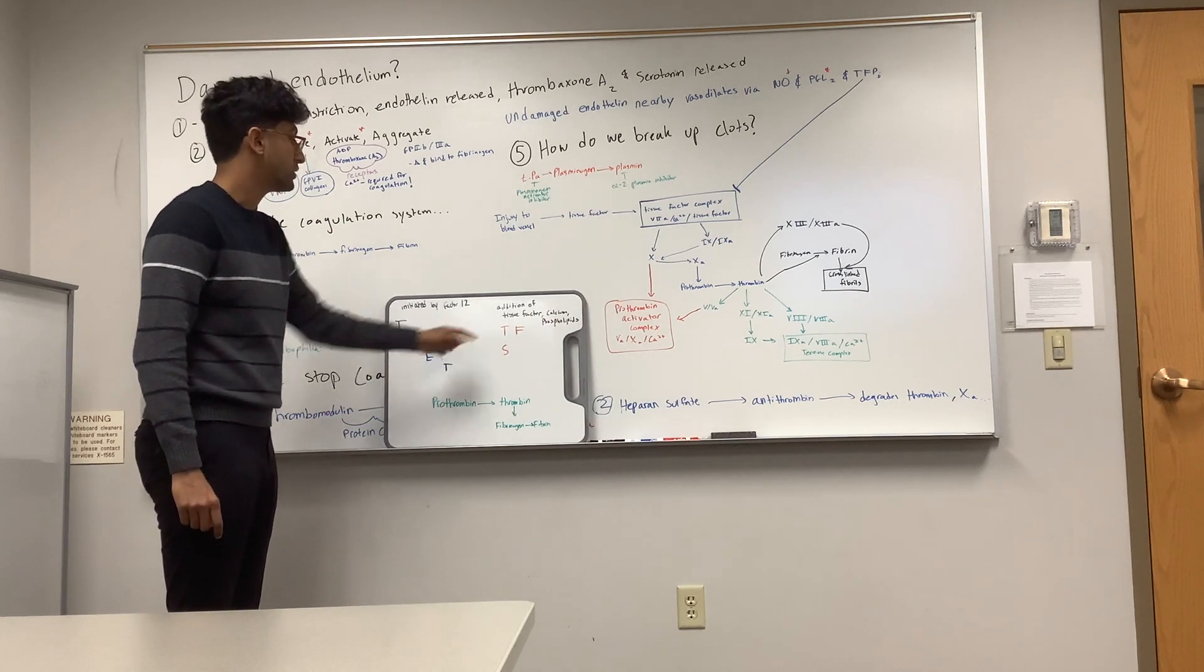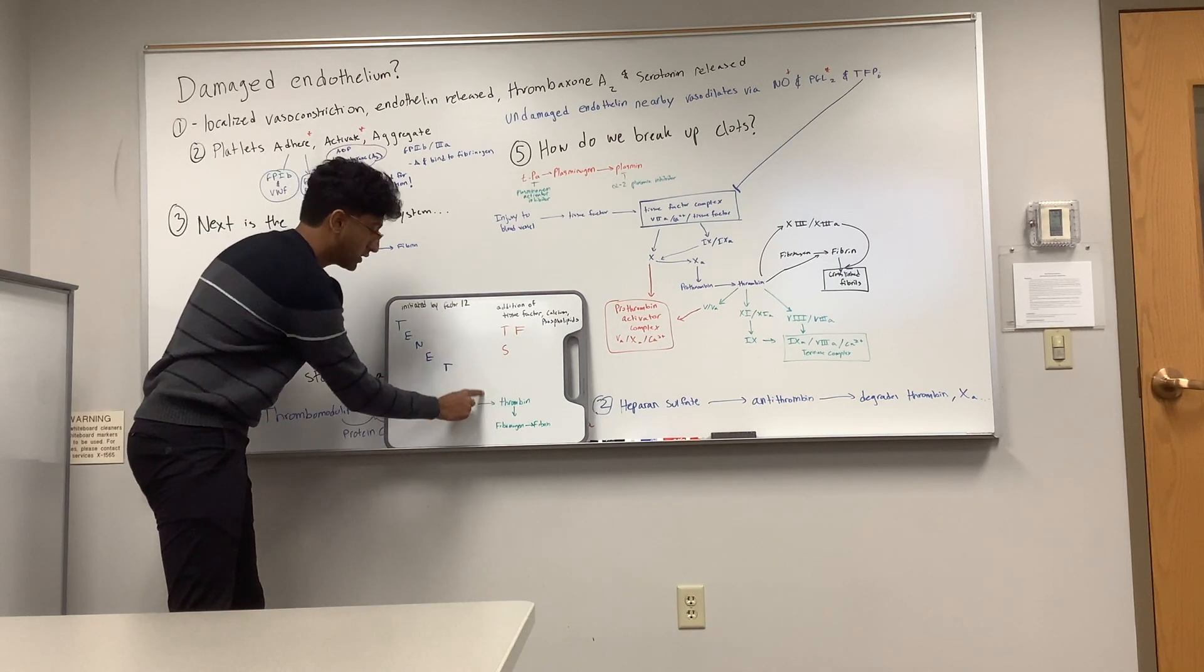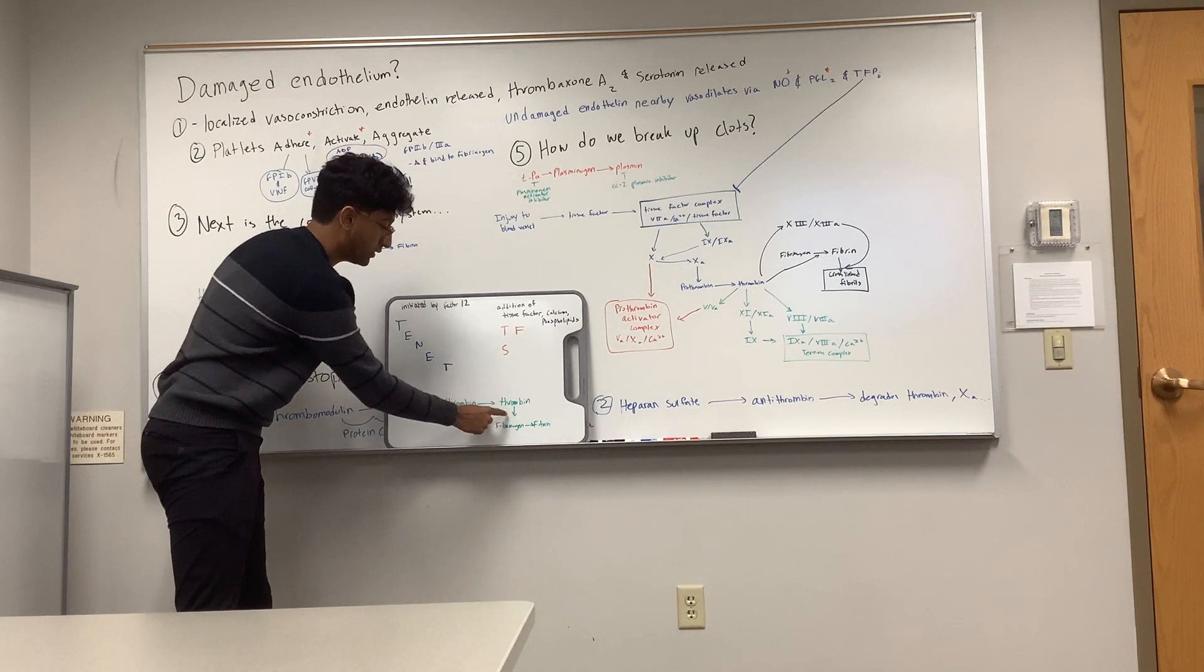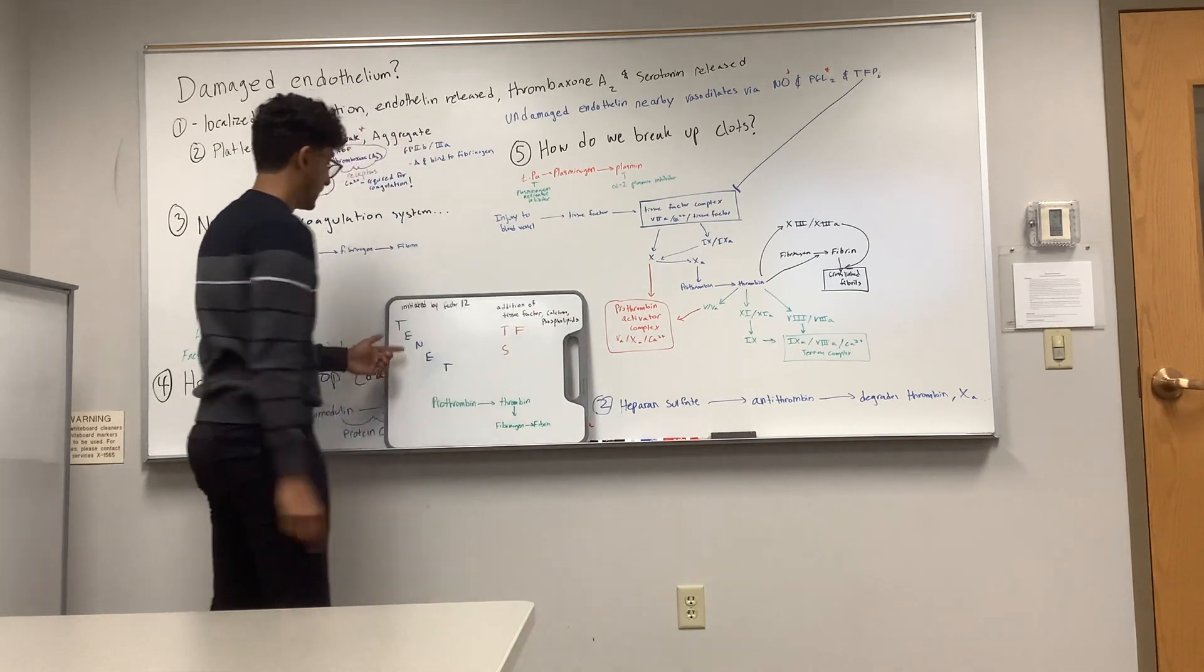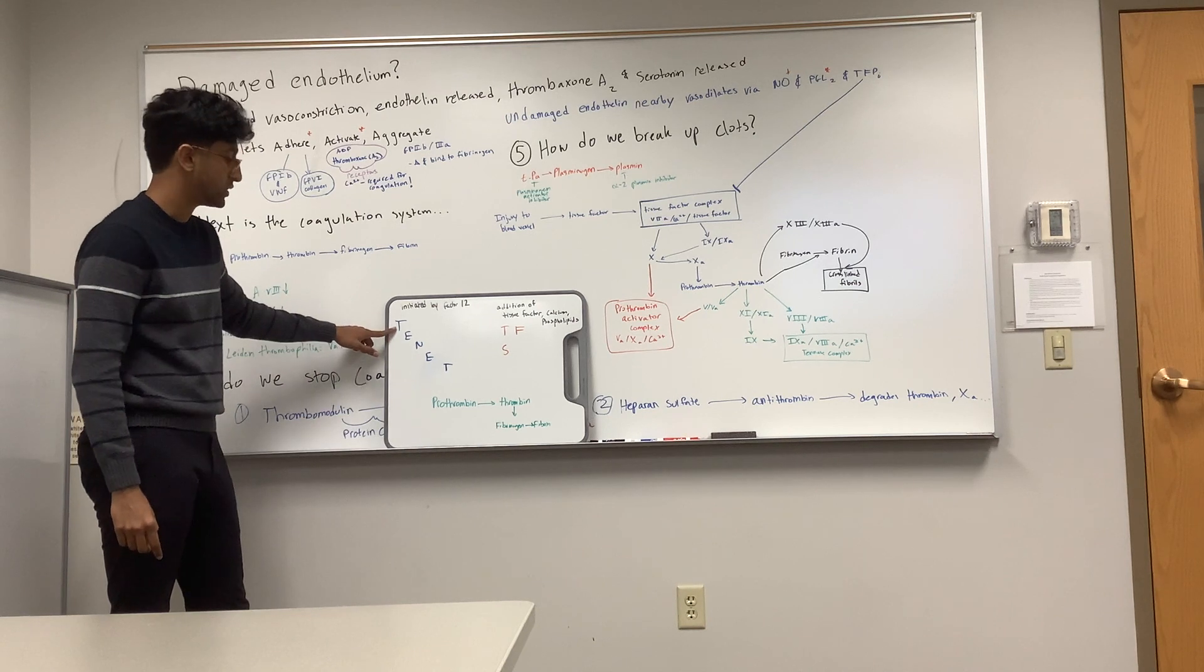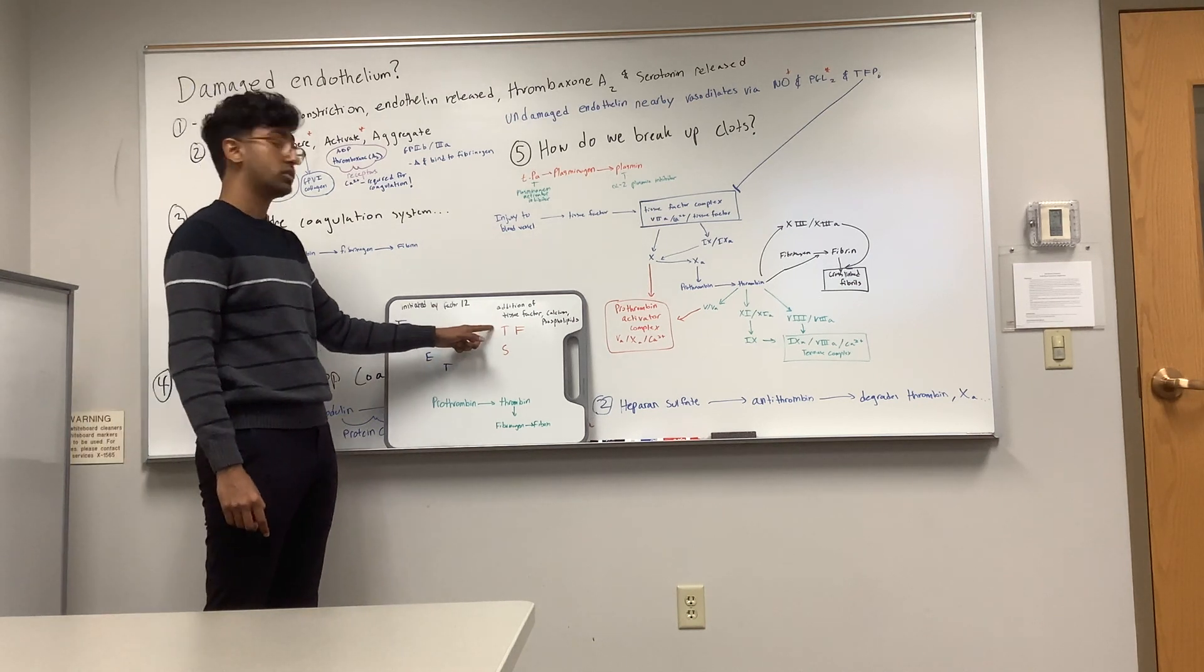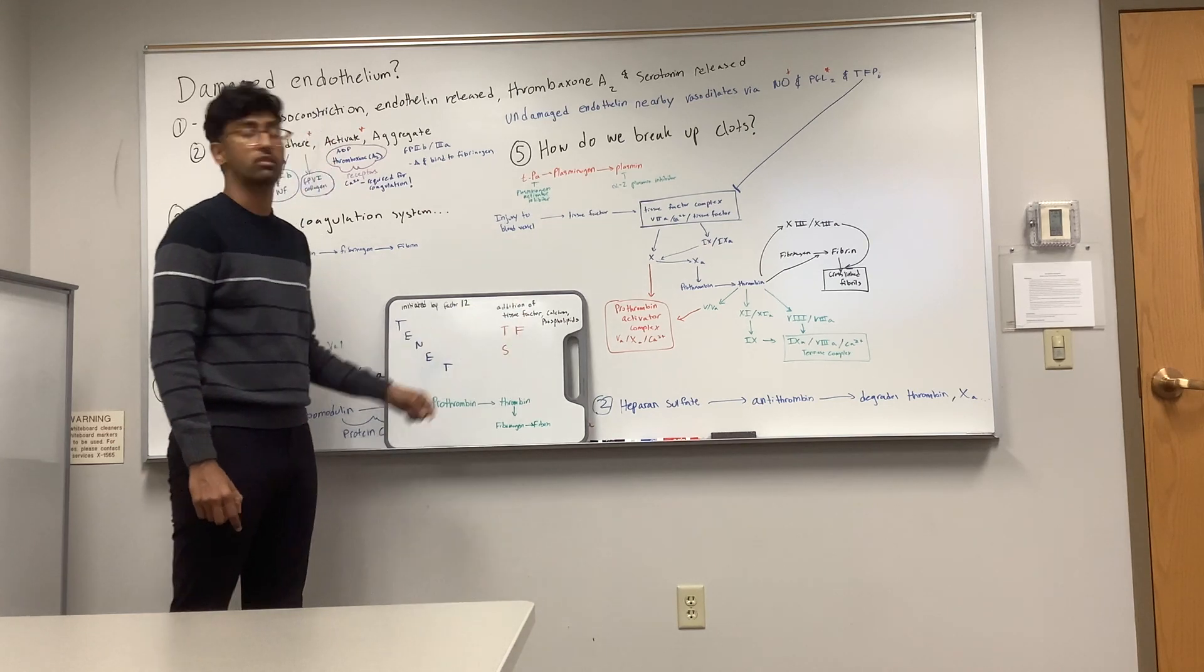And for the extrinsic system, you have tissue factor and factor 7. Eventually, those come together, work together, and we get prothrombin to thrombin. Thrombin creates the fibrin, as we can see over here. The intrinsic system is activated by factor 12, which starts off. And the extrinsic system is activated by the tissue factor, calcium, or phospholipids nearby.